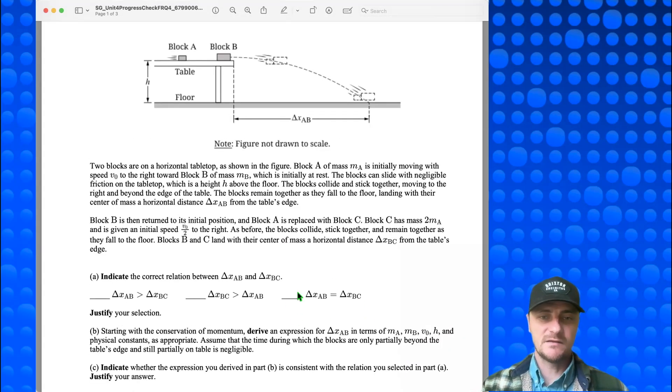It's not this selection. We might think that it is because the initial momentum is the same for both systems. Block A has an initial momentum of MAV0, and that's the momentum of the system because block B is not moving. But in the second scenario, block C has a mass of 2MA but has an initial speed of V0 divided by 2. The 2's would cancel out, and your total momentum is MA times V0. So you might say they have the same total momentum, they must go the same exact distance. But that's not true. It actually turns out that the first selection is true. So check this one: delta XAB is greater than delta XBC.